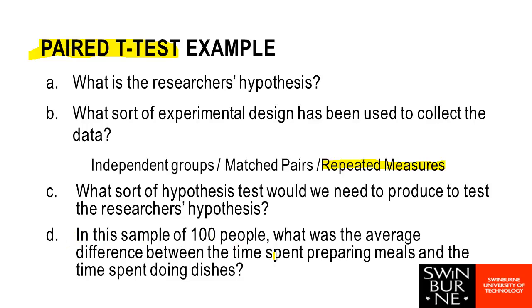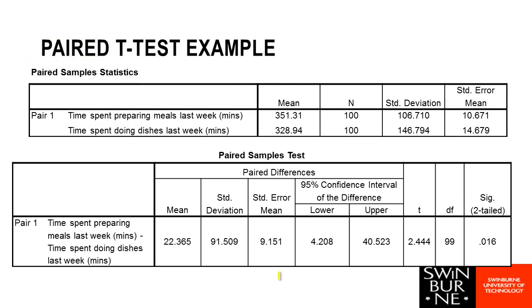Question four: in the sample of 100 people, what was the average difference between the time spent preparing meals and the time spent doing dishes? If we go back to the SPSS table, the box that tells us about the average difference shows 22. Since we know it was minutes, people are spending 22 minutes more on average preparing meals than they are doing dishes.